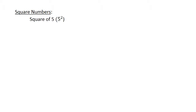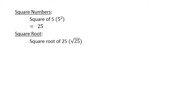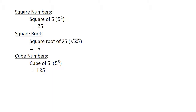Square numbers. The square of 5 equals 25. Square root of 25 equals 5. The cube of 5 equals 125. And the cube root of 125 equals 5.